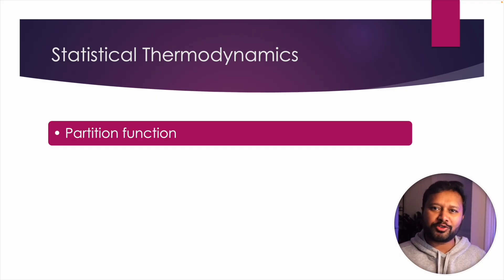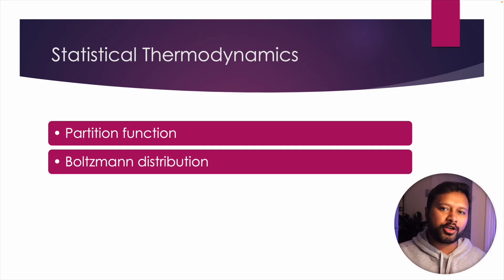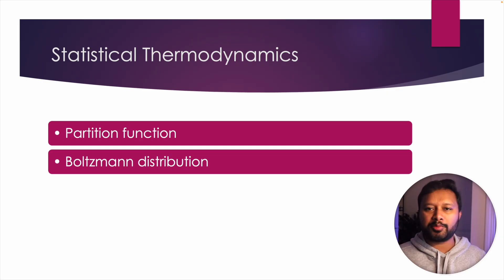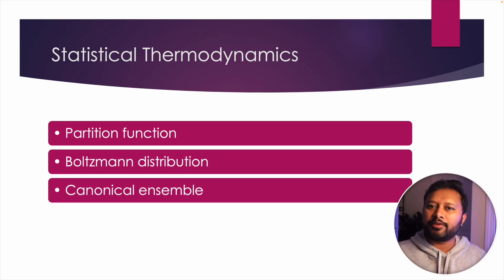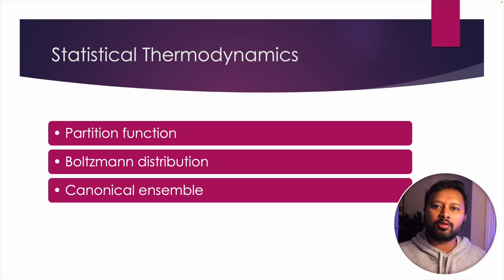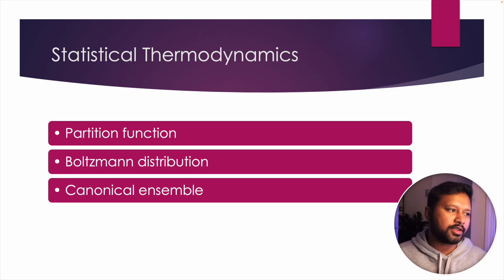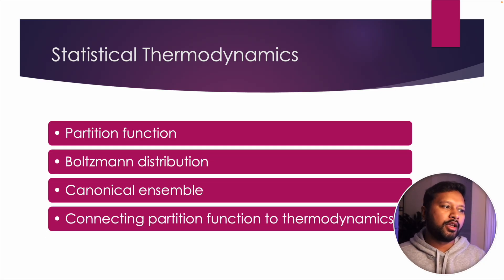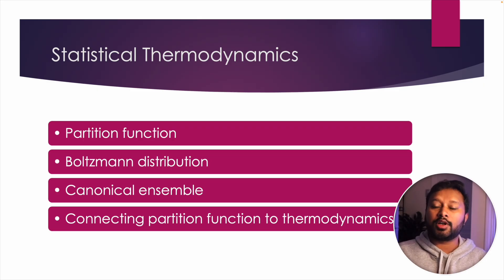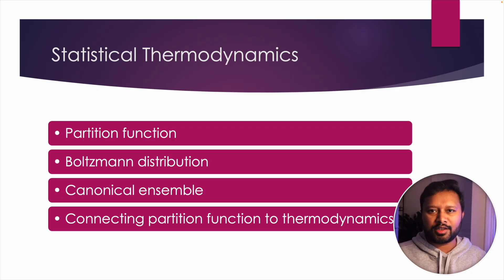Next comes statistical thermodynamics, an important topic related to classical thermodynamics. The basics you must cover are the partition function and how it relates to different quantities, the Boltzmann distribution law (the most important law) and its relationship to the partition function, and canonical ensembles — grand canonical, canonical, and microcanonical — including what conditions and what remains constant in each. Finally, connecting the partition function back to thermodynamics bridges statistical and classical thermodynamics.